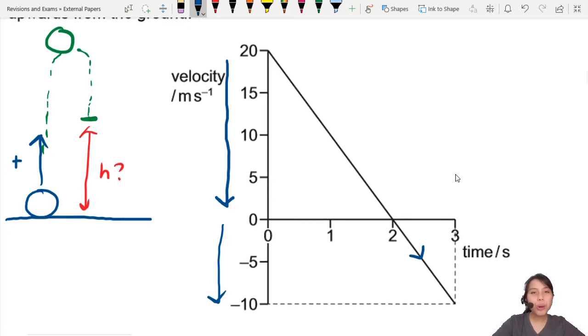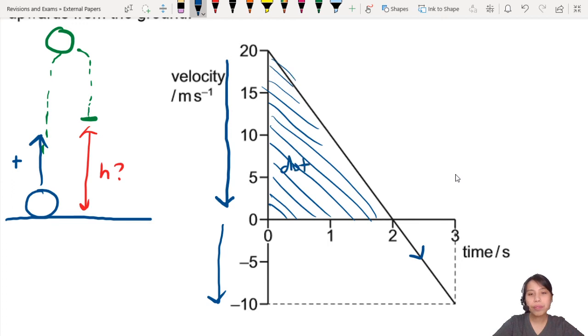you need to know straight away or remember that the area between the graph and the time axis is the distance traveled by the ball, or more accurately, displacement. So for this first part, when the ball is moving up, how far is this? You can find this as the area,